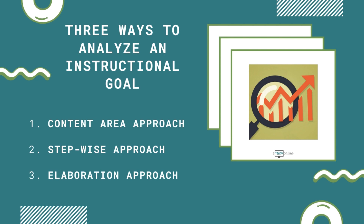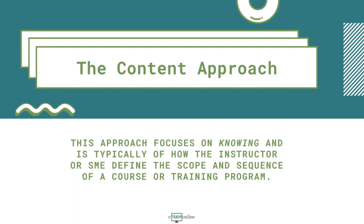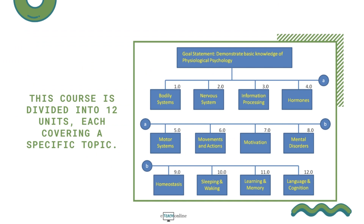The content approach to goal analysis identifies the major topics to be covered in an e-learning course or training program. It focuses on knowing and is typically how subject matter experts define the scope and sequence of a course. For example, an advanced college-level biology course may be divided into 12 units, each covering a topic related to physiological psychology. When goals are analyzed in terms of what learners are expected to know, learners typically concentrate on one particular module without considering the contents of other units. The instructional materials specified for a unit are used in one block of time, and once the class moves on to the next topic, the first one is often forgotten.